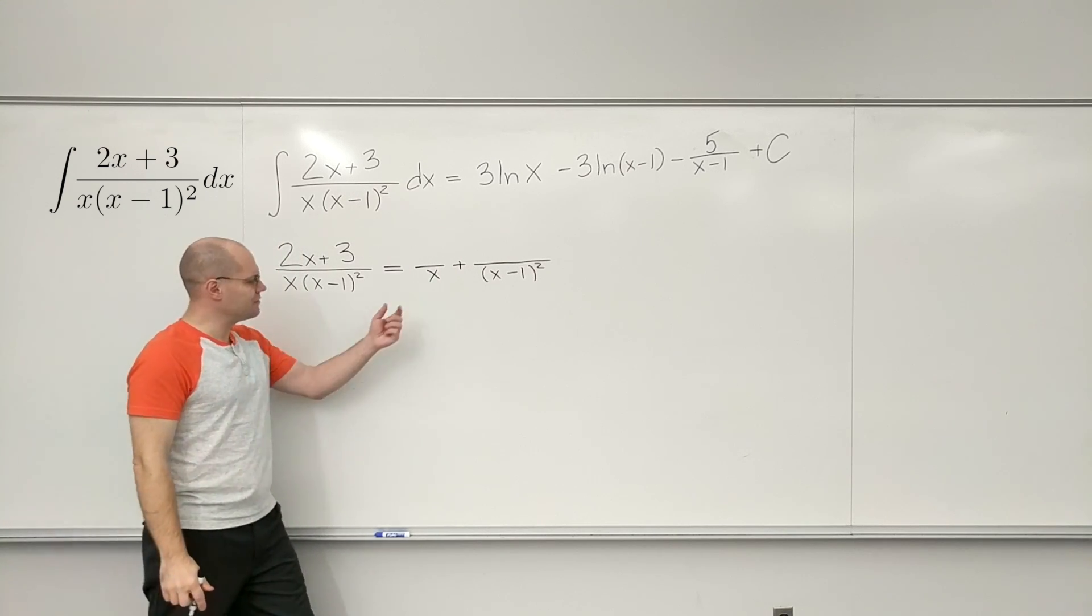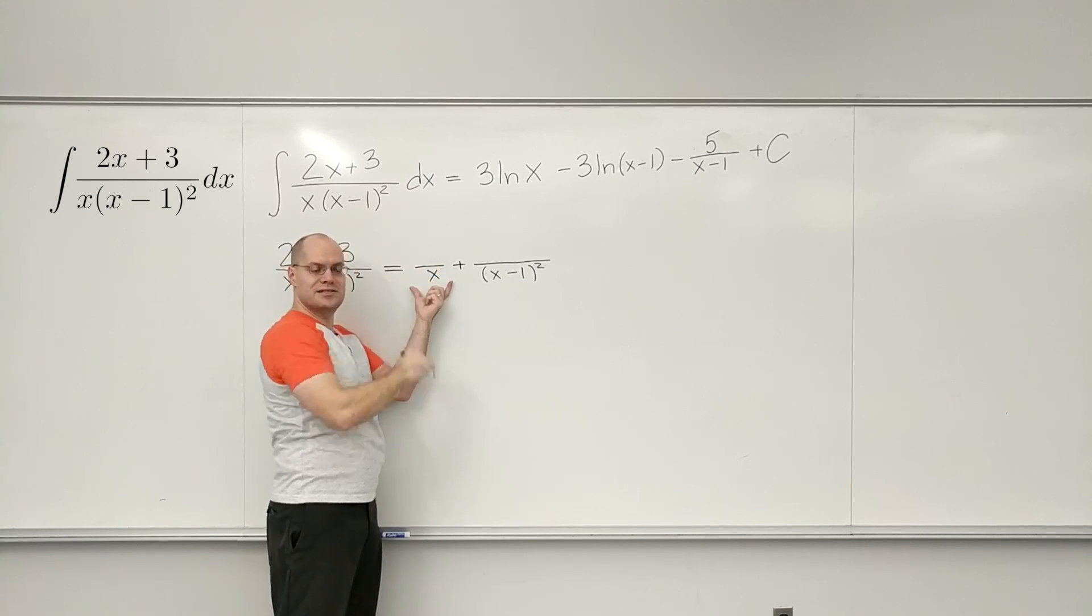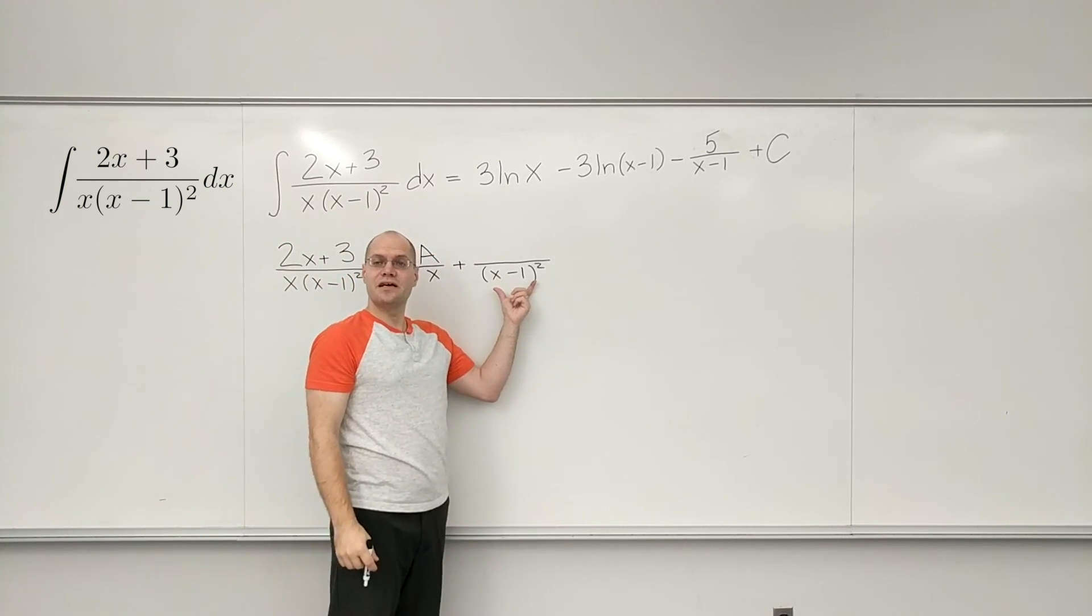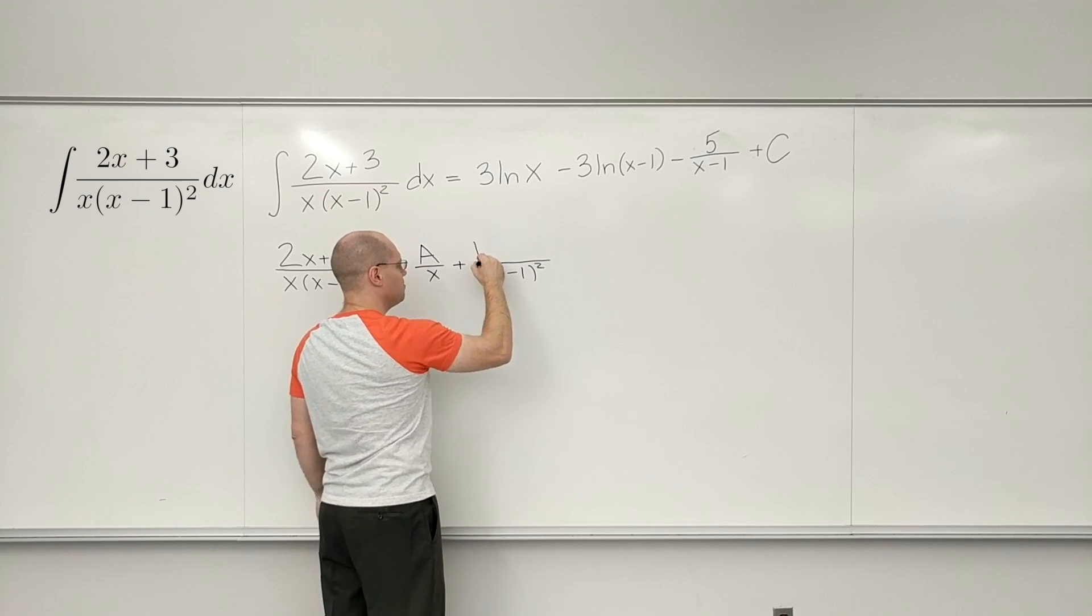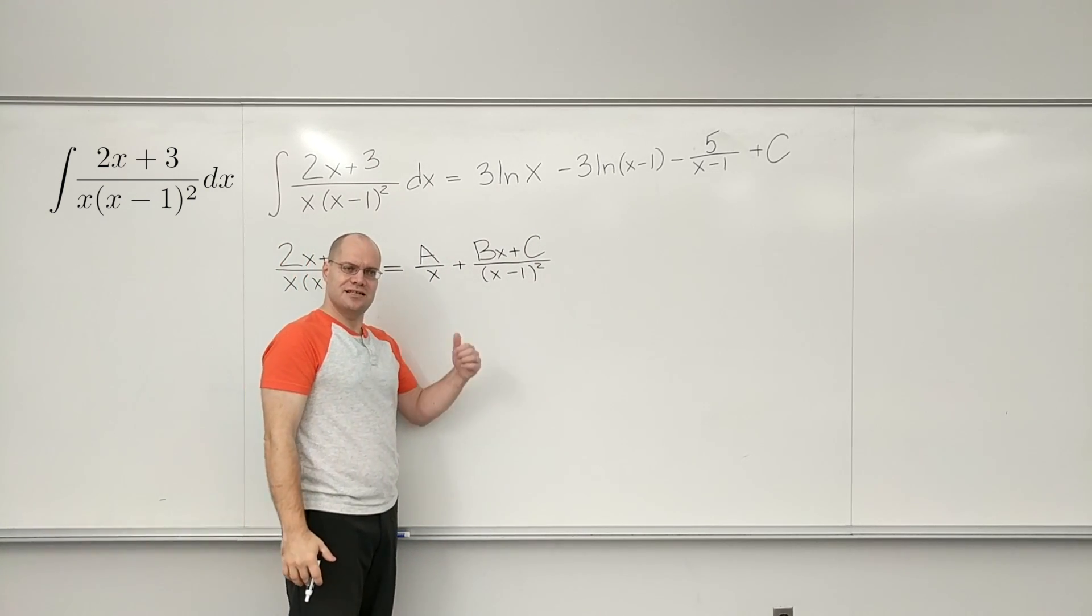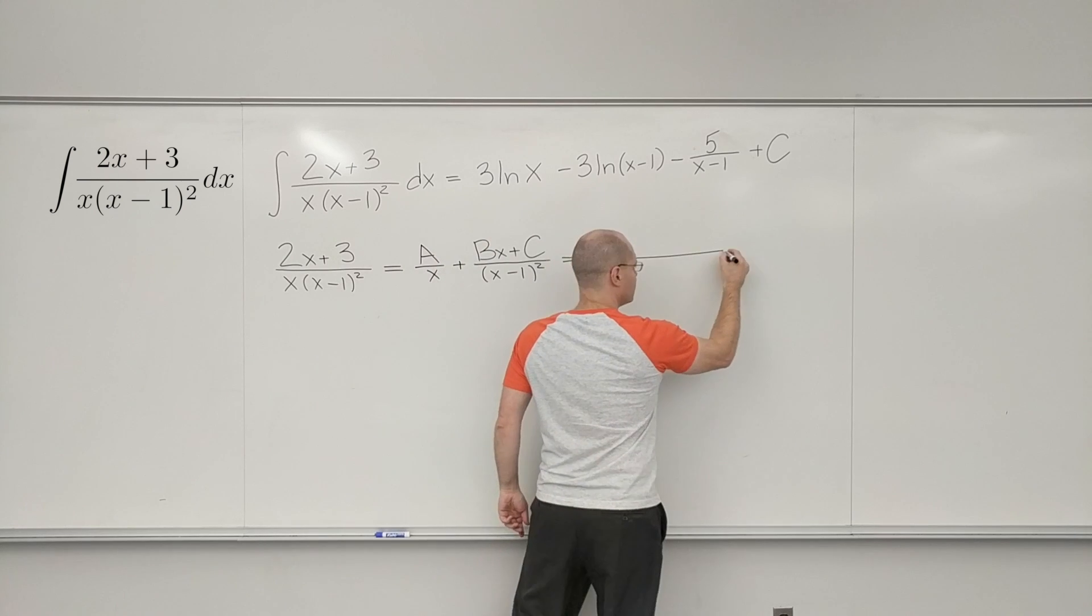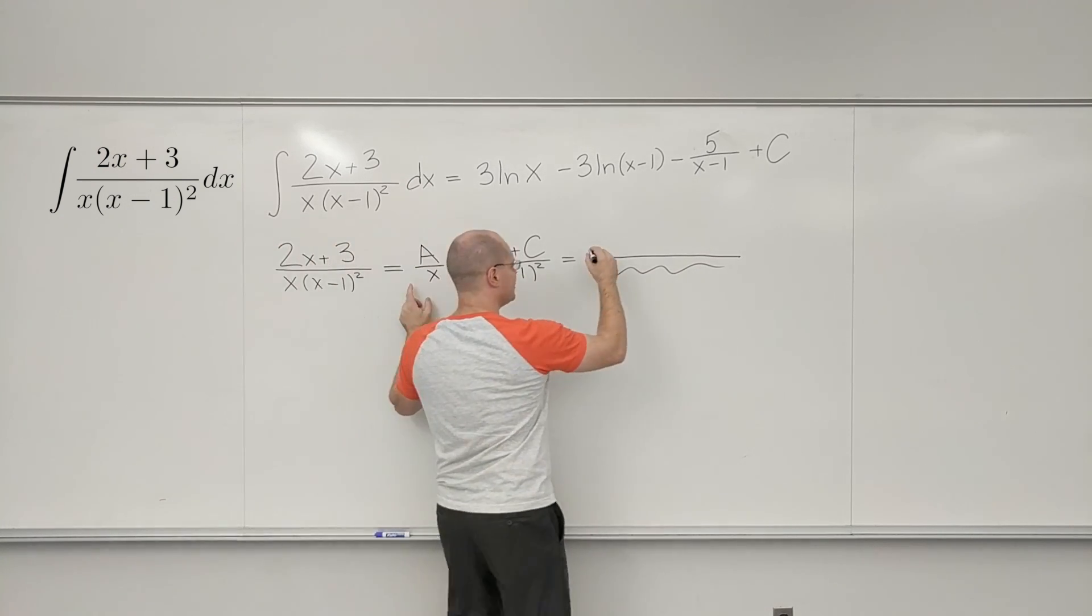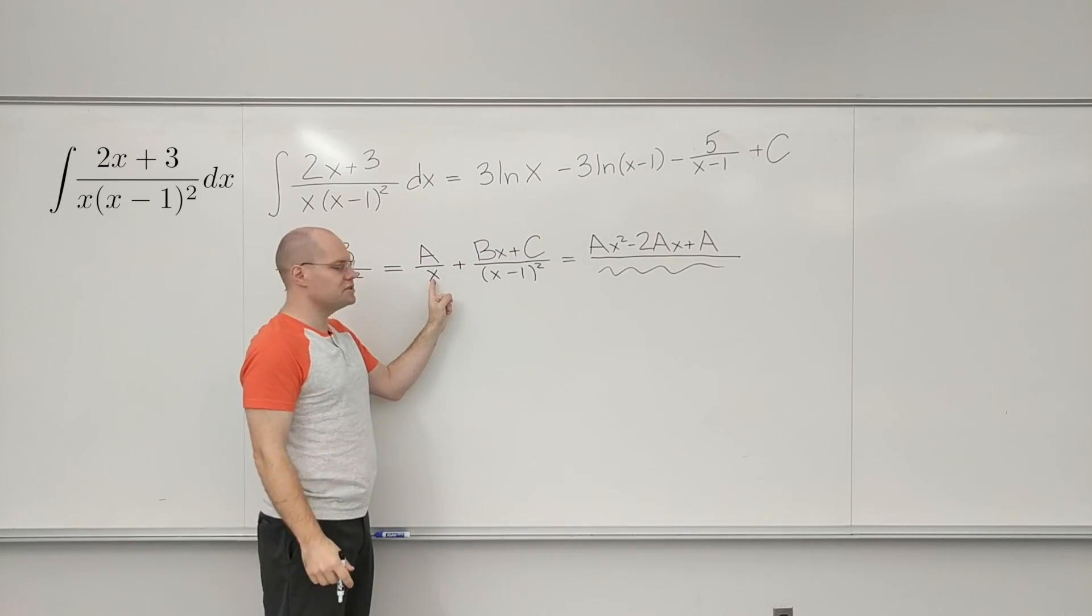And now remember what we said, that whatever the degree is in the denominator, the polynomial in the numerator should be of degree one less than what's in the denominator. So here, we have no choice but to just have A. But this is a quadratic polynomial. So we can afford to have a linear polynomial on top. So we'll write it as bx plus c. The advantage of this approach is that it fits yesterday's recipe a little bit more neatly. And now we do the combining.